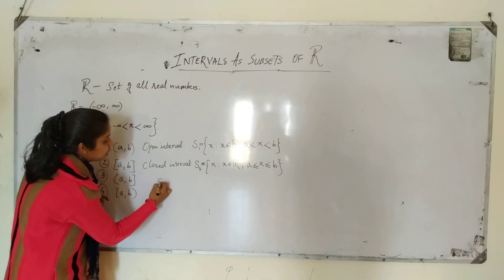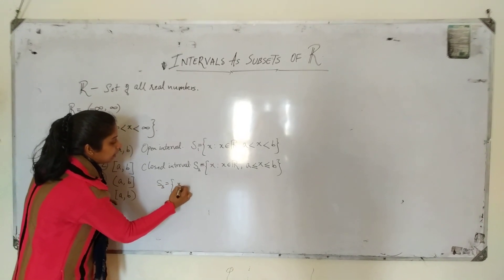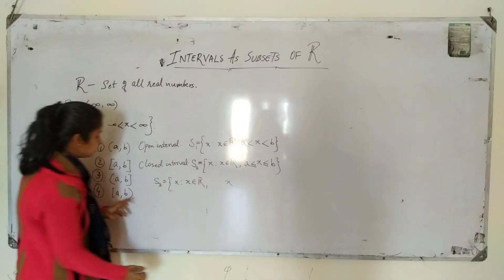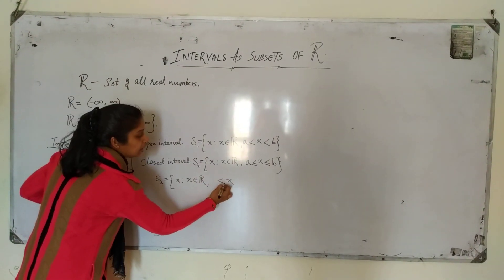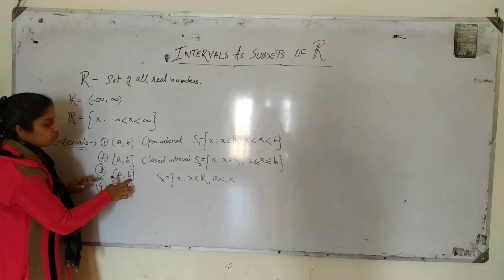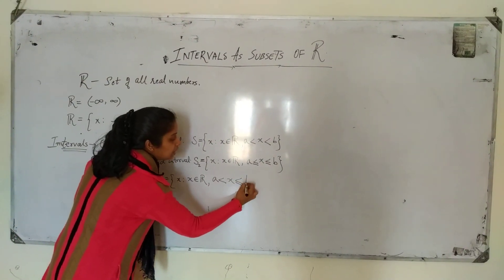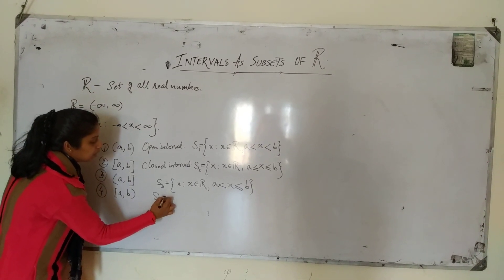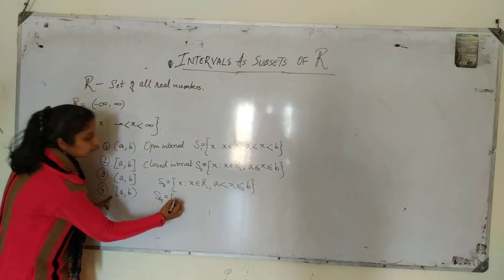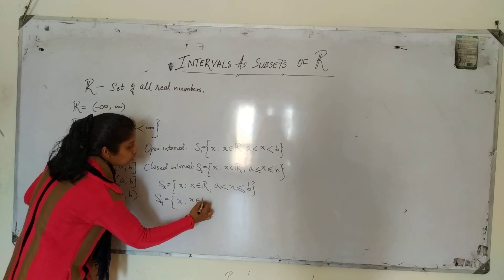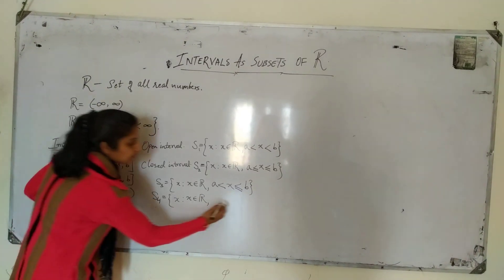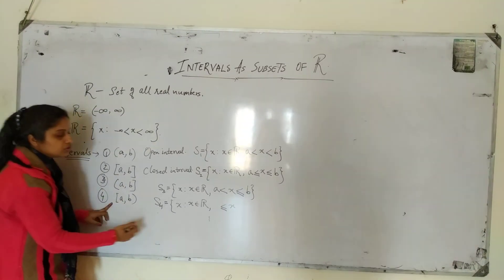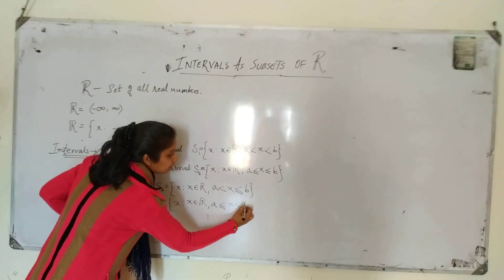For the interval (a, b], x belongs to R such that x is greater than a and less than or equal to b. For the closed interval [a, b], x belongs to R such that x is greater than or equal to a and less than or equal to b.